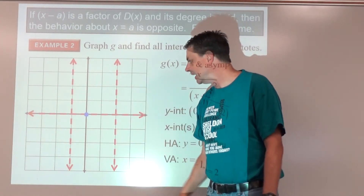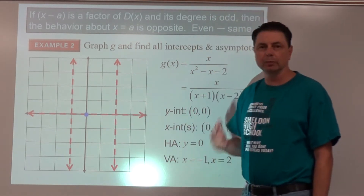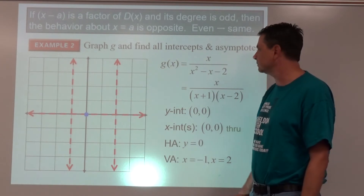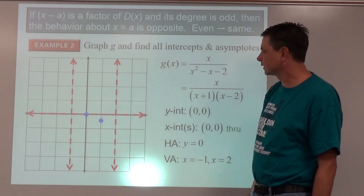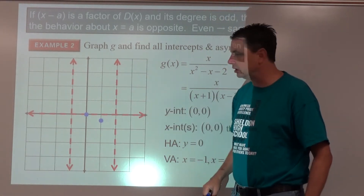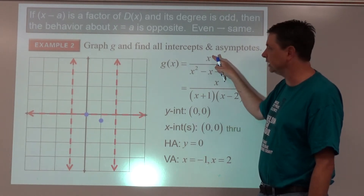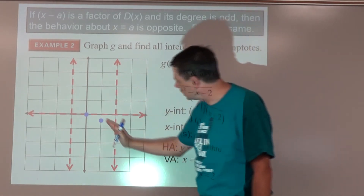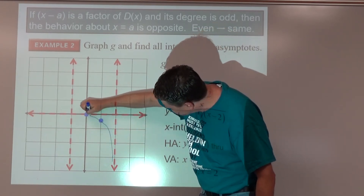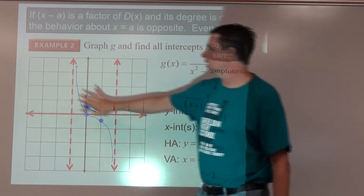We need more information. Let's plug in x equals 1 to get another point between the asymptotes. g(1) equals negative one half, so we have the point (1, negative 1/2). Now we can draw the middle section: pass through the x-intercept (odd degree, so it's a through), start low, get close to the left asymptote, pass through the x-intercept, then get close to the right asymptote.